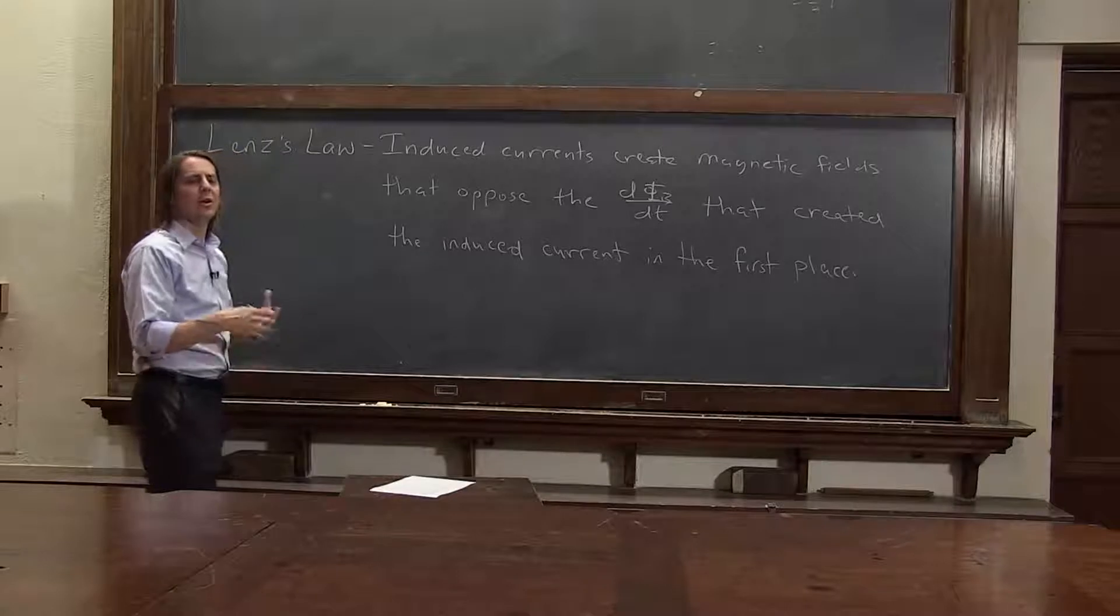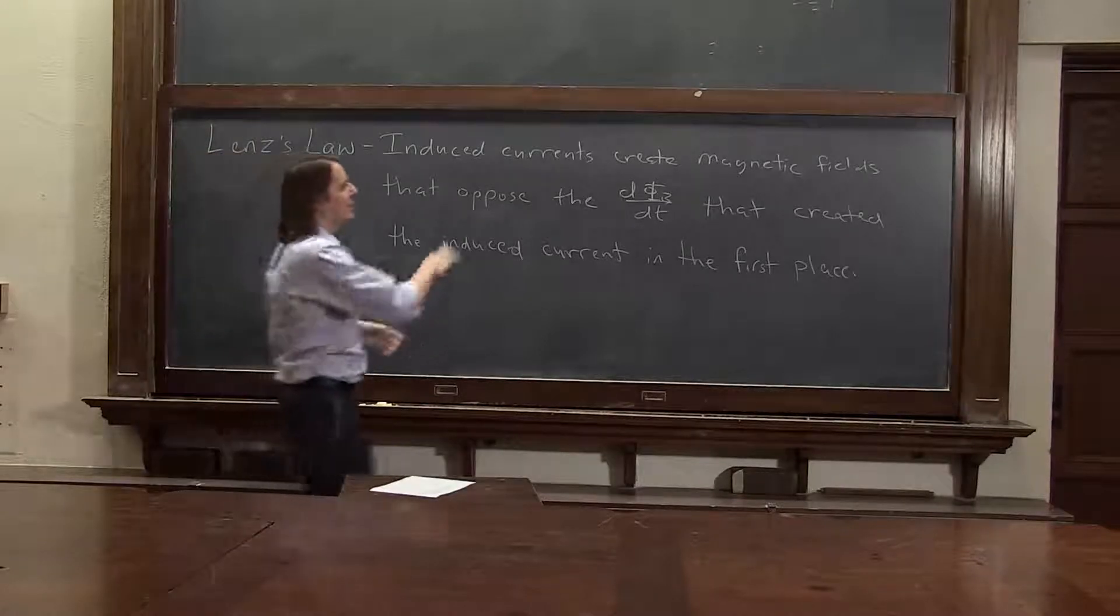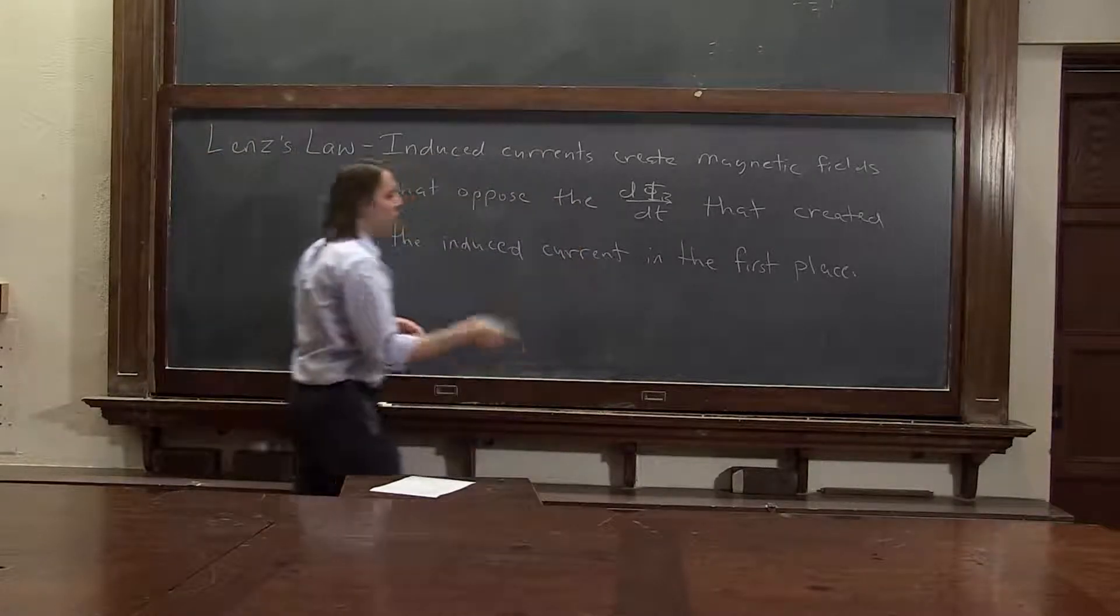So we're just thinking about what kind of magnetic field does it make? And this is basically a rule about which way the current will go.